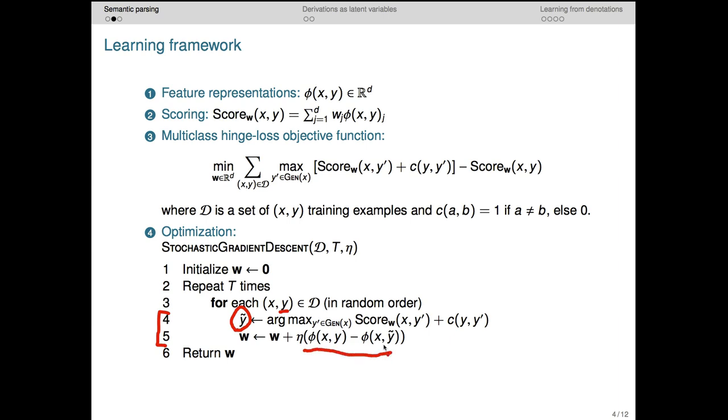However, if the predicted output is different from the actual one, then we make an adjustment to the weight vector. And at the end of training, we should have a weight vector that, together with our grammar, produces accurate predictions about logical forms, we hope.